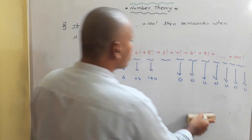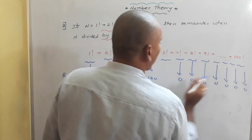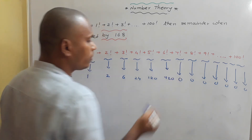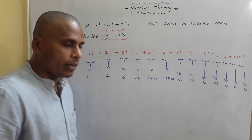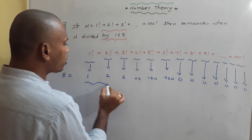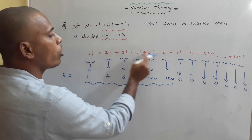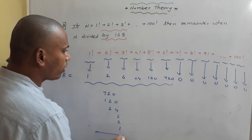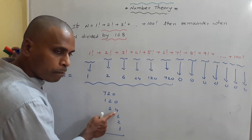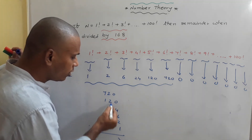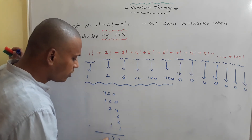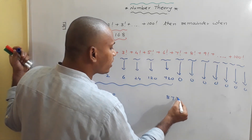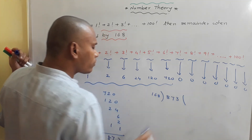Our task is to find the remainder when the total number is divided by 168. After 7!, all remainders are 0. So we pay attention only to 1!, 2!, 3!, 4!, 5!, and 6! = 720. We need to add 720 + 120 + 24 + 6 + 2 + 1, which equals 873. Now we need to find the remainder when 873 is divided by 168.